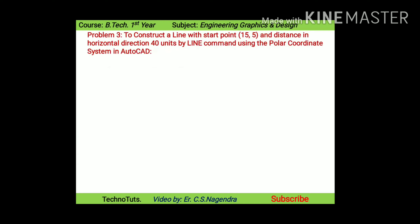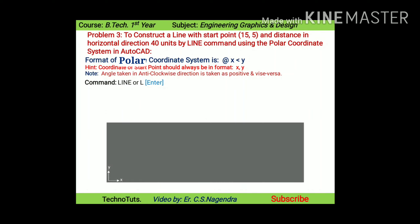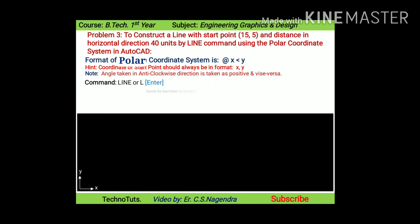Problem number three: construct a line with start point (15,5) and distance in horizontal direction of 40 units by line command using the polar coordinate system in AutoCAD. The format used for the polar coordinate system is @distance less-than angle. Here X is the distance and Y is the angle. The start point coordinates should always be given in X comma Y format. When using the polar coordinate method, angle is taken as positive for counter-clockwise direction and negative for clockwise direction.